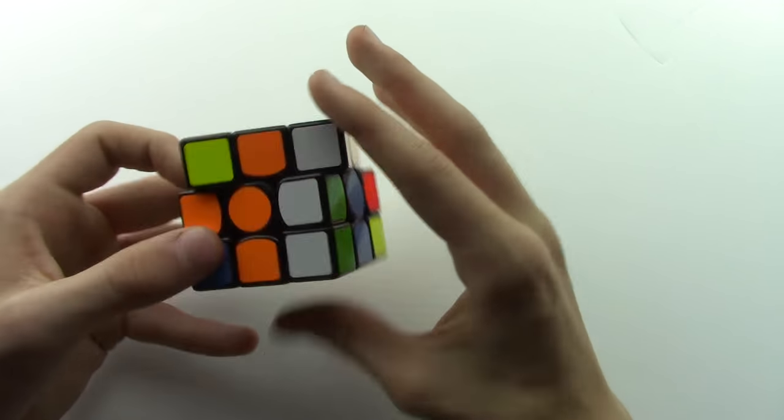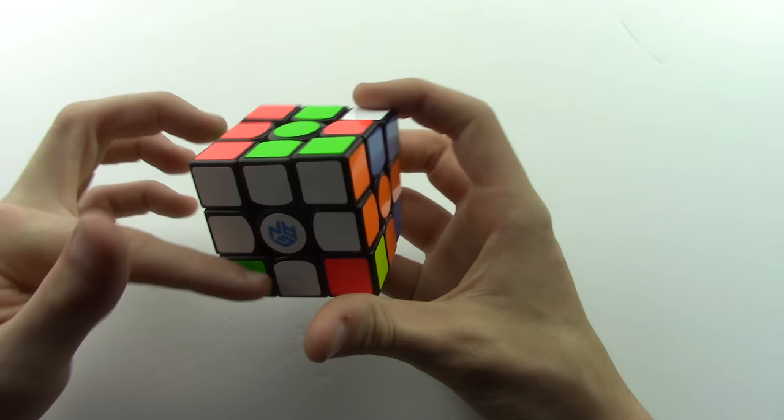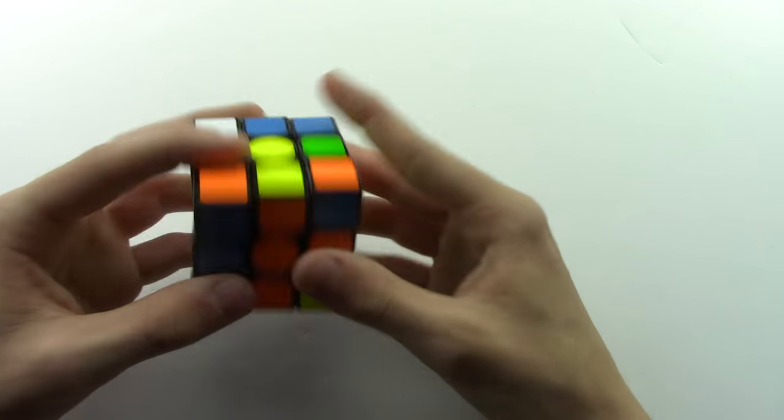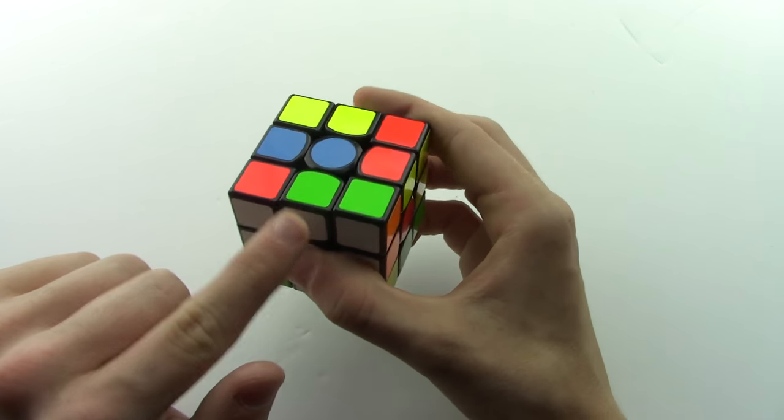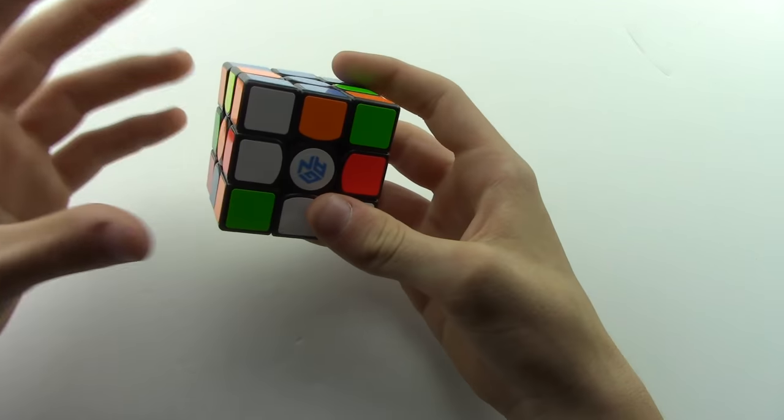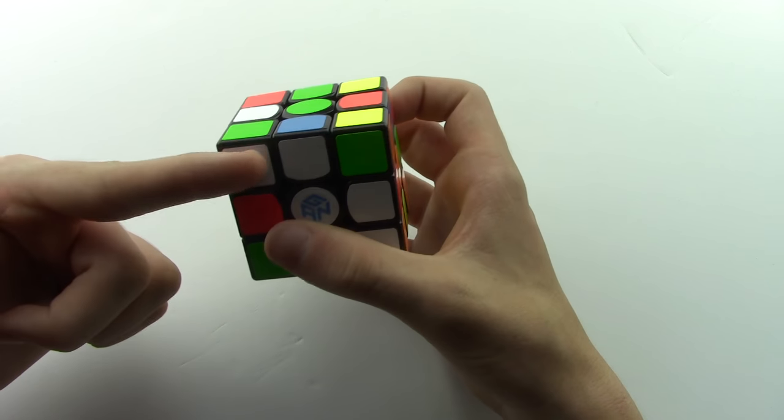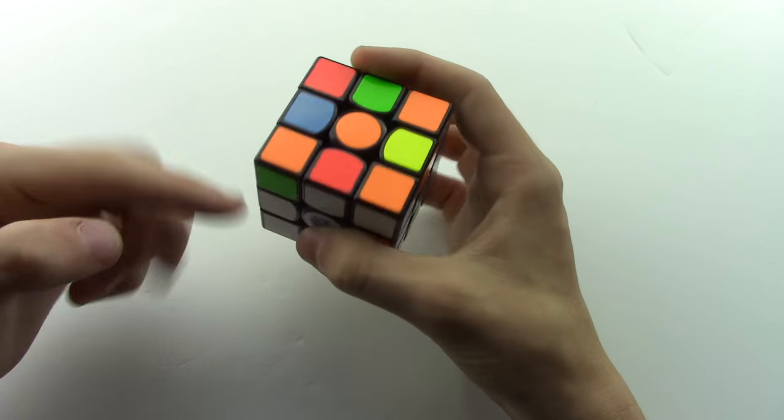So what you want to be able to do is be able to solve it like this where you can have the opposites. So for example, instead of solving the red to the red you can solve the red to the orange and have the blue solve to the green. And say this is how my cube starts, I don't want to have to switch these and then try to figure out where the other pieces are.